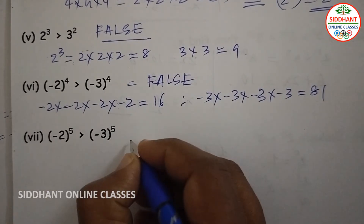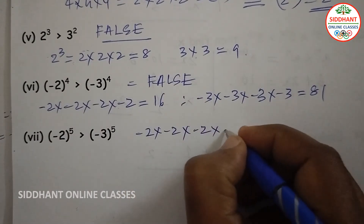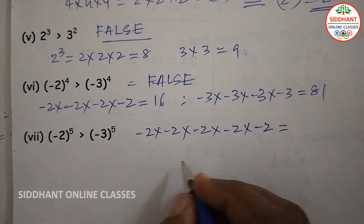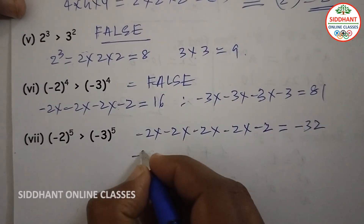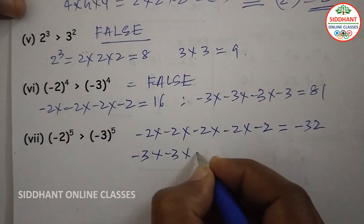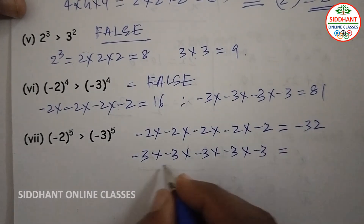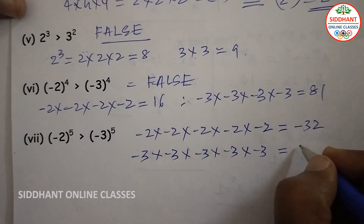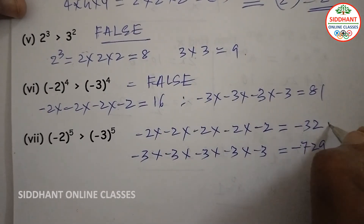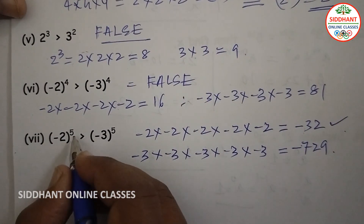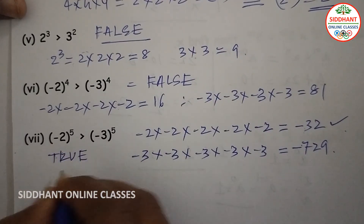Seventh statement: (-2) to the power of 5 is greater than (-3) to the power of 5. Calculating: (-2)^5 equals (-2) multiplied five times, giving minus 32. And (-3)^5 equals (-3) multiplied five times, giving minus 243. Since minus 32 is greater than minus 243, the statement is true.